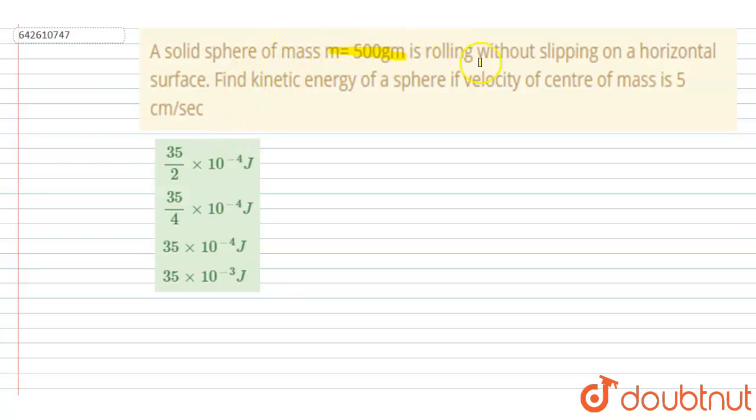...mass 500 grams is rolling without slipping on a horizontal surface. You have to find out the kinetic energy of the sphere if the center of mass velocity is given as 5 centimeter per second. So let's see, if I...